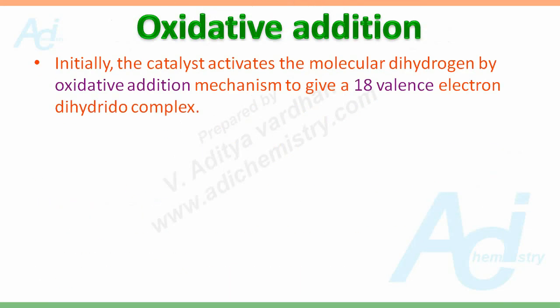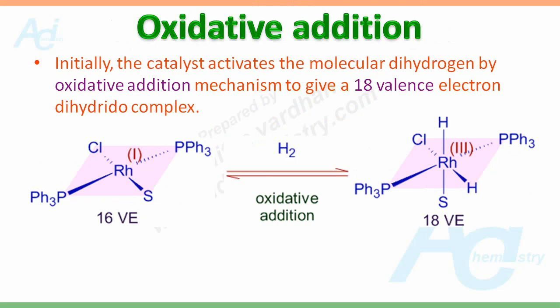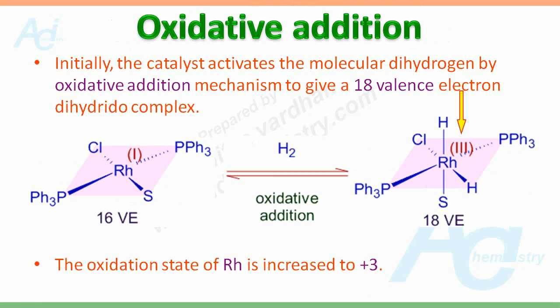The thus generated catalyst activates the molecular dihydrogen by oxidative addition mechanism to give an 18 valence electron dihydrido complex. Here the oxidation state of Rh is increased to +3, and the square planar complex is converted to an octahedral complex. Initially it was a 16 valence electron complex and after addition of H₂ it becomes an 18 valence electron complex.